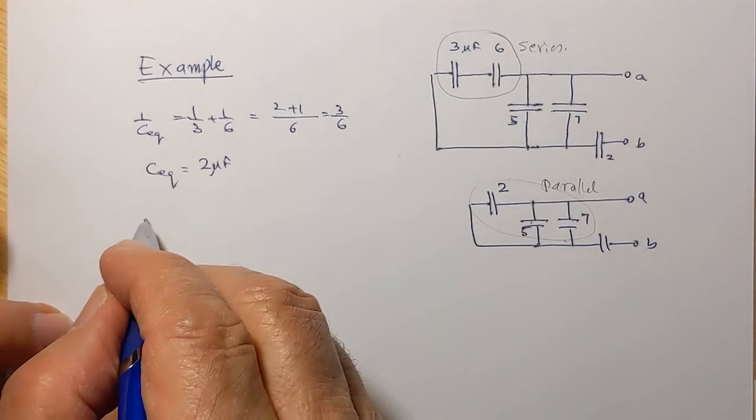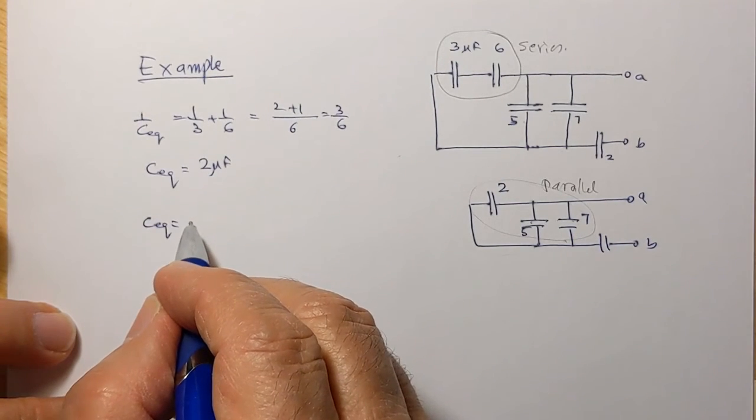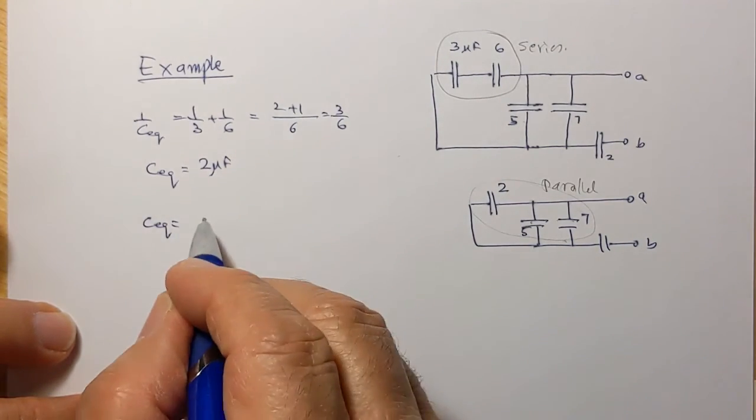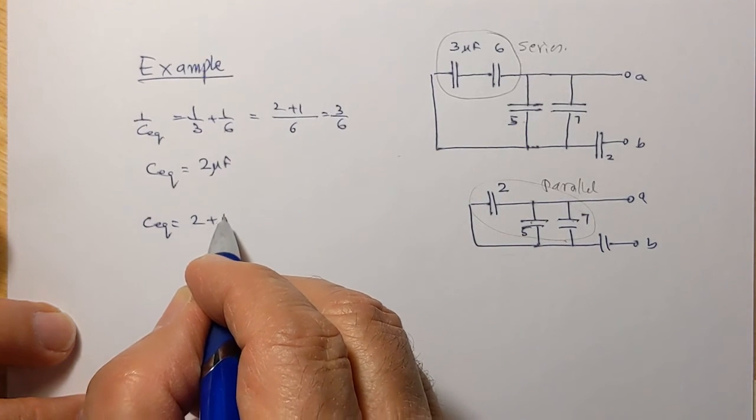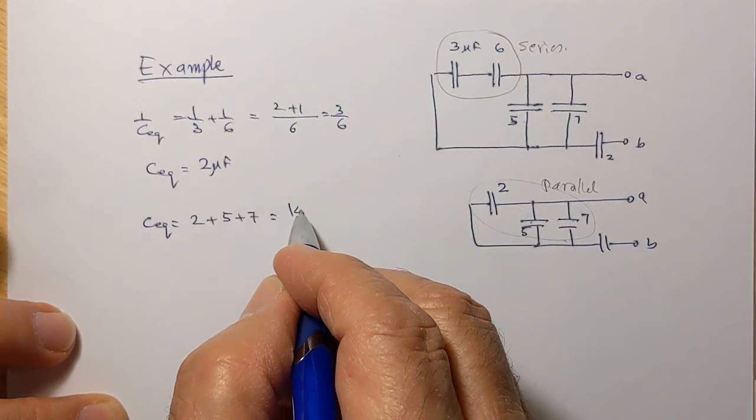So we'll add these and say C equivalent of these three capacitors is going to be from the formula C1 plus C2 plus C3, going to be 2 plus 5 plus 7. That's going to be 14.